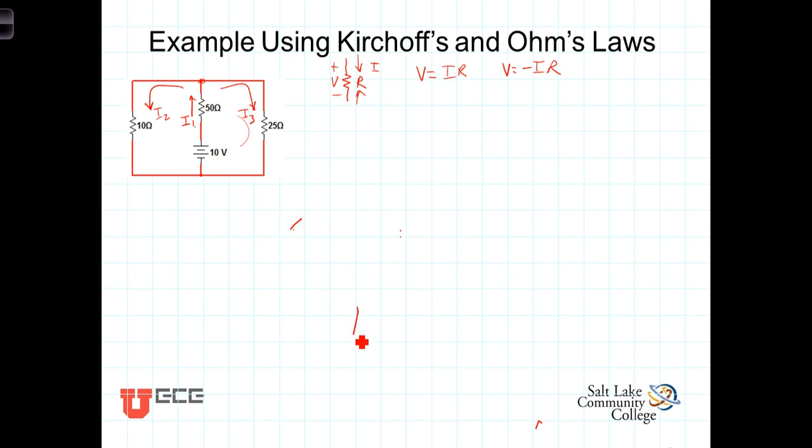Let's start by writing a node equation. So KCL at the top node: I1 is referenced into the node. Currents into the node have a negative sign on them. So minus I1, I2, and I3 are both leaving. So plus I2, plus I3. The sum of those three currents equals zero.